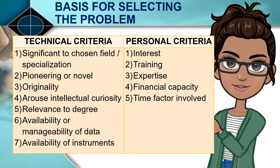The following may be considered as a basis for selecting the problems in technical and personal aspects. In technical criteria: 1. It must be significant to the chosen field or specialization. 2. Pioneering or novel. 3. Originality. 4. It arouses intellectual curiosity. 5. Relevance to degree. 6. Availability or manageability of data. 7. Availability of instruments.